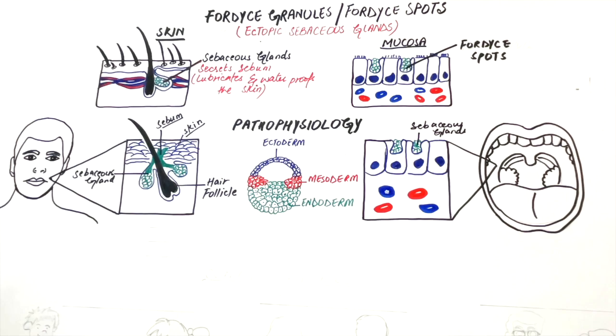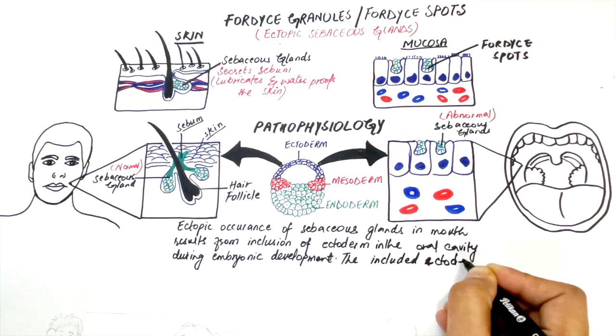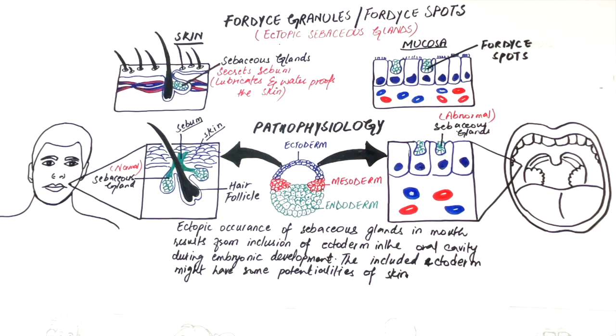The ectopic occurrence of sebaceous glands in the mouth may result from inclusion of ectoderm in the oral cavity during embryonic development. The included ectoderm might have some of the potentialities of the skin in the course of development of the upper and lower jaw during embryonic life, which causes the formation of Fordyce granules within the oral mucosa.